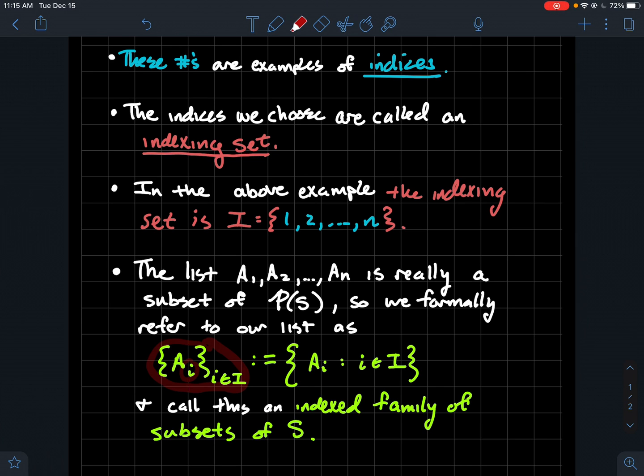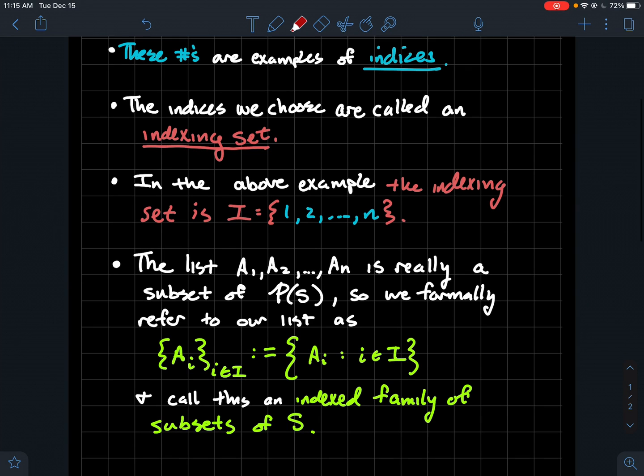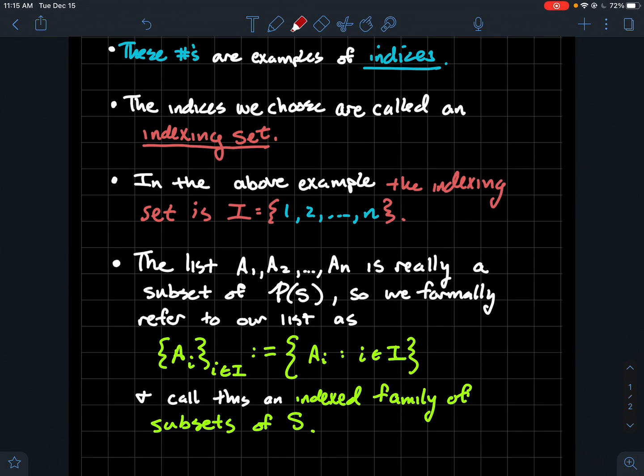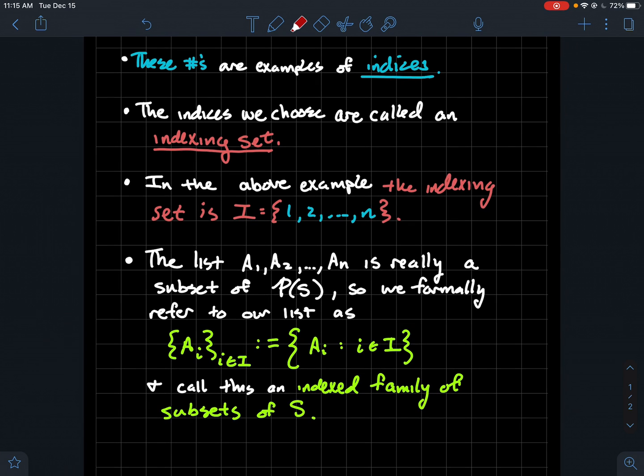In other words, what you're indexing is, what your index says. That is our indexed family of subsets of S. Again, we're just taking a bunch of subsets and considering those.